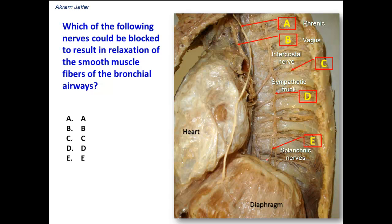Which of these five nerves carry parasympathetic fibers? It is the vagus nerve. The vagus nerve is parasympathetic. As it reaches the hilum of the lung, it contributes to the formation of a plexus of nerves — the pulmonary plexus — together with the sympathetic fibers, visceral branches from the sympathetic trunk.